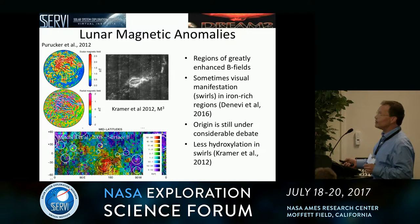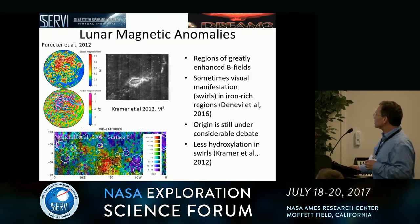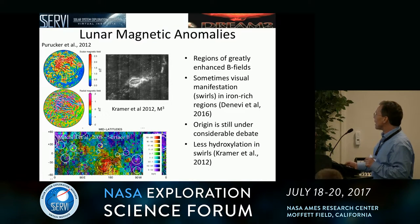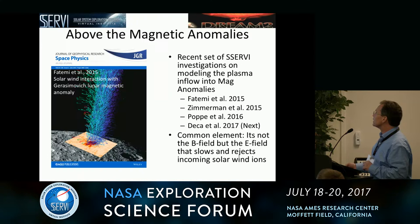Sometimes there's visual manifestations of these magnetic features in the form of these spectacular swirls. The origin is still under considerable debate. One interesting observation is that there seems to be less hydroxylation, or less hydrogenation — less hydrogen in these swirl regions. George Kramer found this and reported back in 2012, and they'll be important in this discussion.